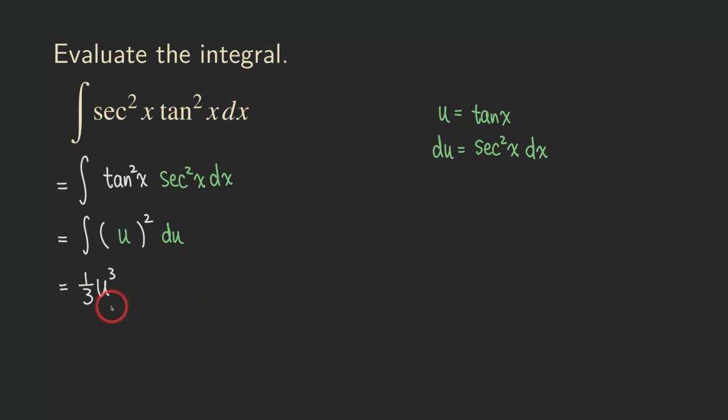And then now what? Final answer, we can just put the tangent back into the u, then we are finished with the problem. So what are we getting here? It's one over three. And then we get, that's tangent, right?